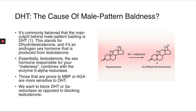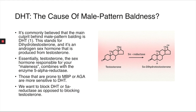DHT is commonly believed to be the main culprit behind male pattern baldness. Every time you see a bracket with a number, that means we're citing research or an academic study — you can head to the description to do extra research. DHT stands for dihydrotestosterone, an androgen sex hormone produced from testosterone when the 5-alpha reductase enzyme attaches to testosterone to create DHT. People prone to male pattern baldness are more sensitive to DHT — it doesn't mean they have more of it. We don't want to block testosterone due to negative side effects, but we do want to block DHT or 5-alpha reductase.